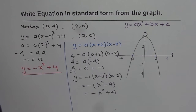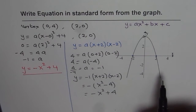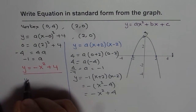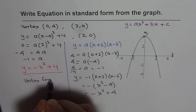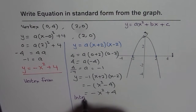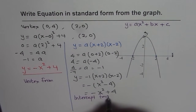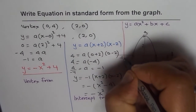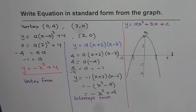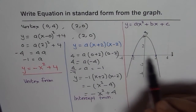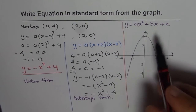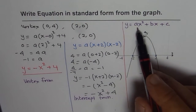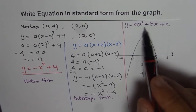So we found two different ways of writing the equation in standard form from the given graph — one using vertex form and the other using intercept form. You could also find the equation directly in standard form by using three points simultaneously and eliminating variables to find the values of A, B, and C.